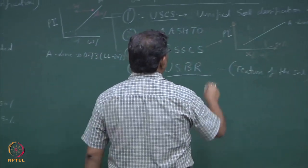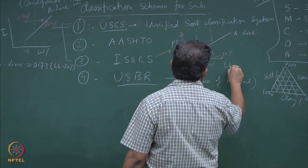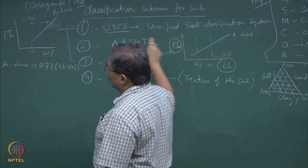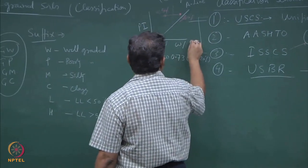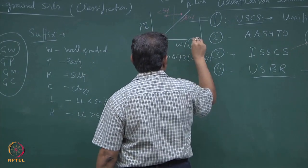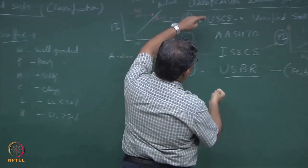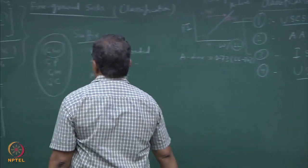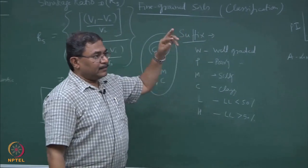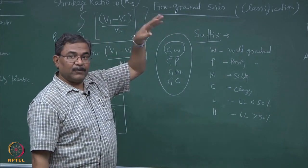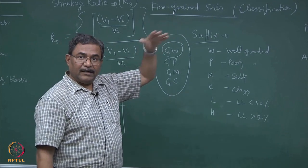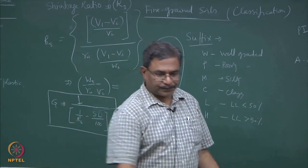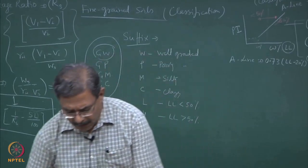Please remember: when you use plasticity index and liquid limit, this is for fine grained soil. These classification systems are for fine grained materials. For coarse grained material, we have utilized C_u and C_c by using D_10, D_60, D_30, D_15 and so on. This becomes the common language used internationally to define the soil mass.